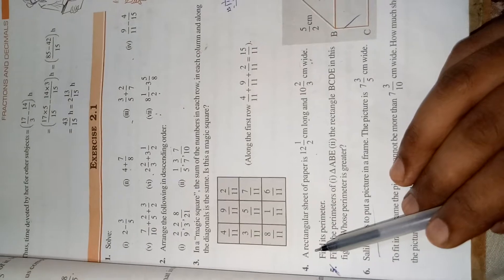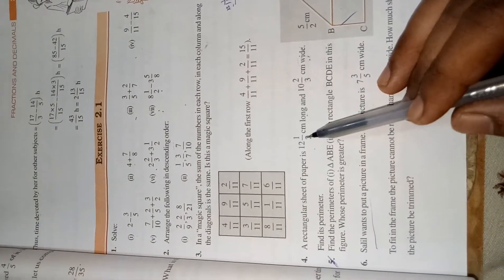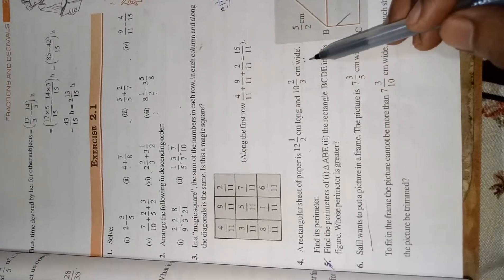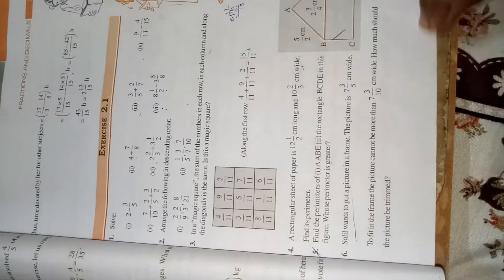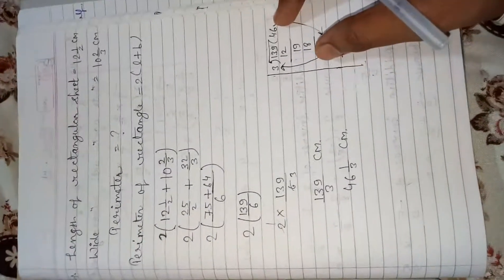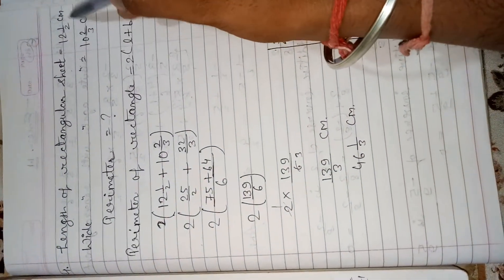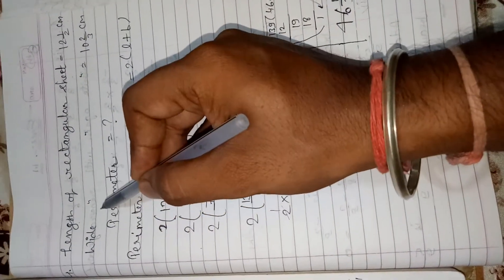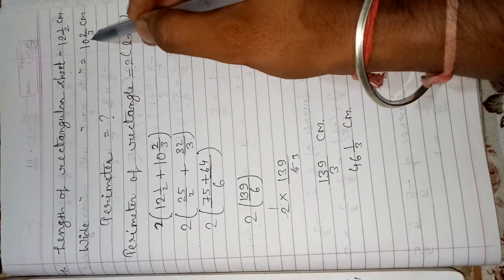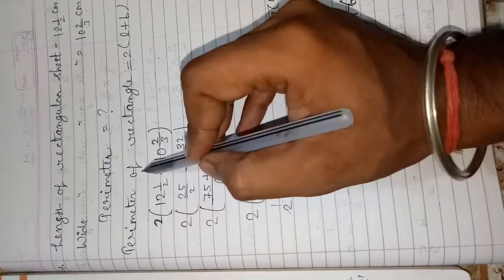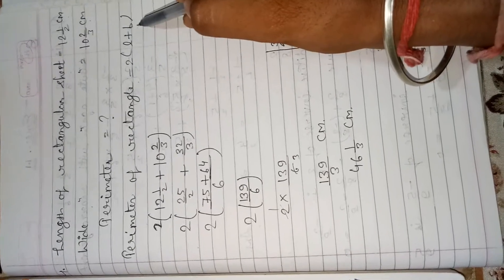Now, look at the question number 4. A rectangular sheet of paper is 12 and 1 by 2 cm long and 10 and 2 by 3 cm wide. For you, I have solved already. So watch this video carefully. Fourth question. First, length of rectangular sheet is 12 and 1 by 2 cm. Breadth of the rectangle sheet is 10 and 2 by 3 cm. We have to find perimeter. So the perimeter of rectangle formula is 2 bracket L plus B. L is length and B is breadth as wide.